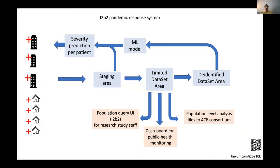Imagine an i2b2 pandemic response system. I came up with this slide when I was sitting in the emergency response room in India, where patients with COVID were calling in and couldn't get a bed. As the wave surged, more people couldn't find beds. There was a practical need to triage — the only available variable was partial pressure of oxygen. Even one more variable to predict who would become severe would have helped enormously.